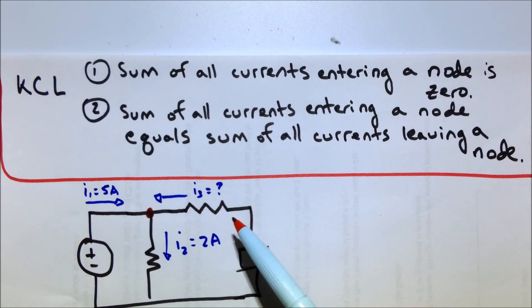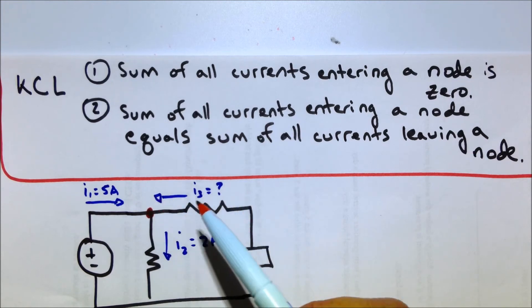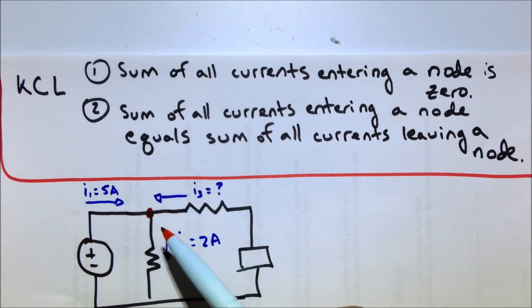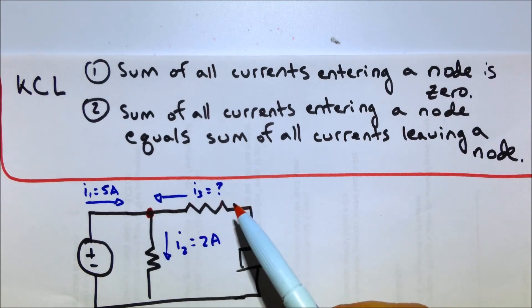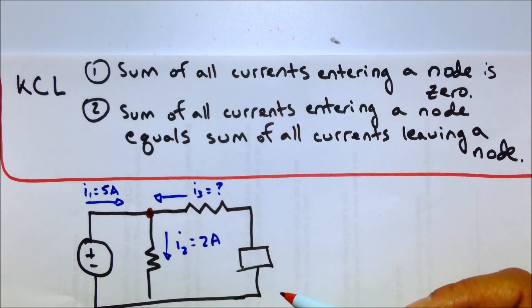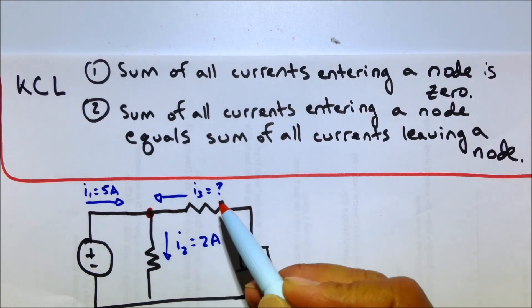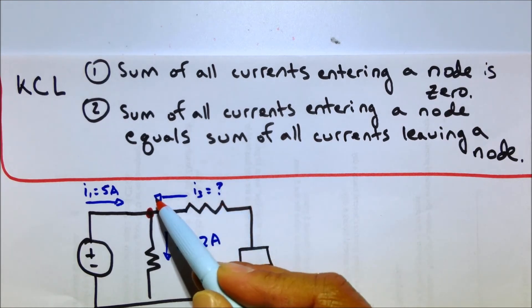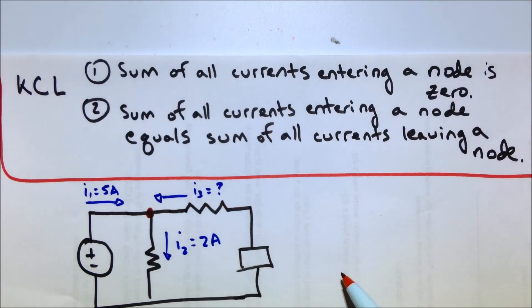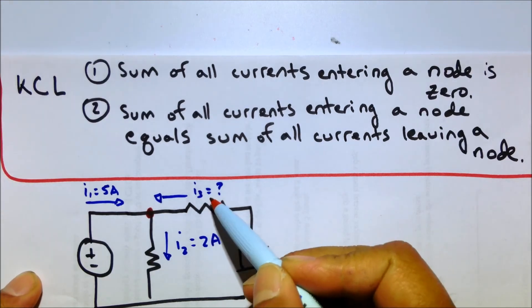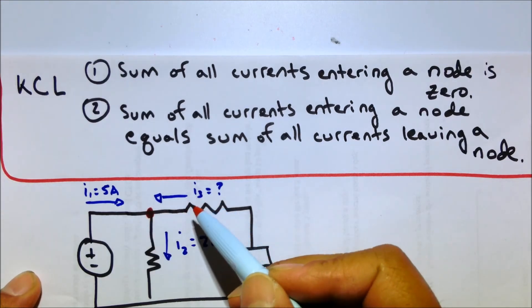The first question you might think about is, well, how do we know which direction we're going to say the current flows? Because it could be going into the node, or it could be going out of the node. We just don't know yet. What you do is you arbitrarily just pick a direction. So let's say we're going to say going this way is our positive current, and then you set up your equation.